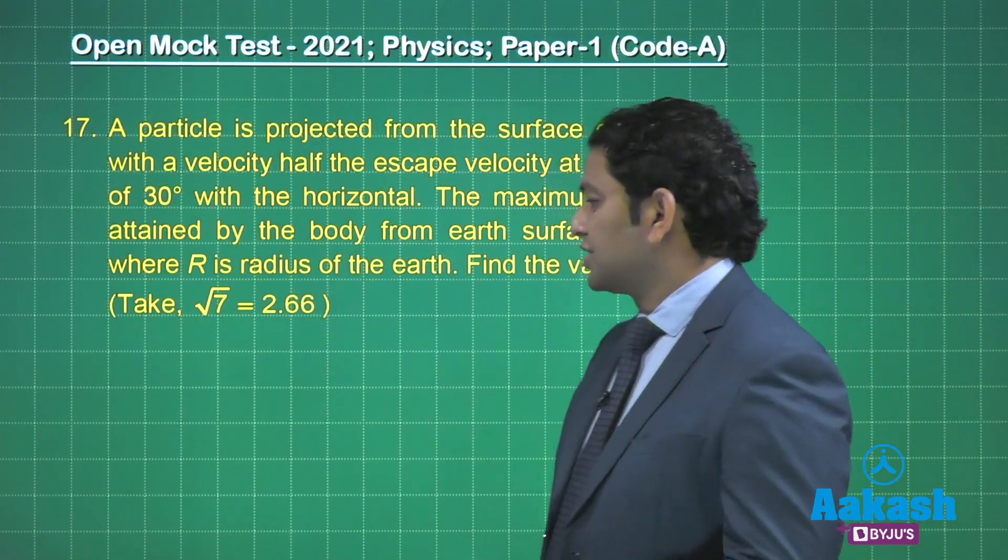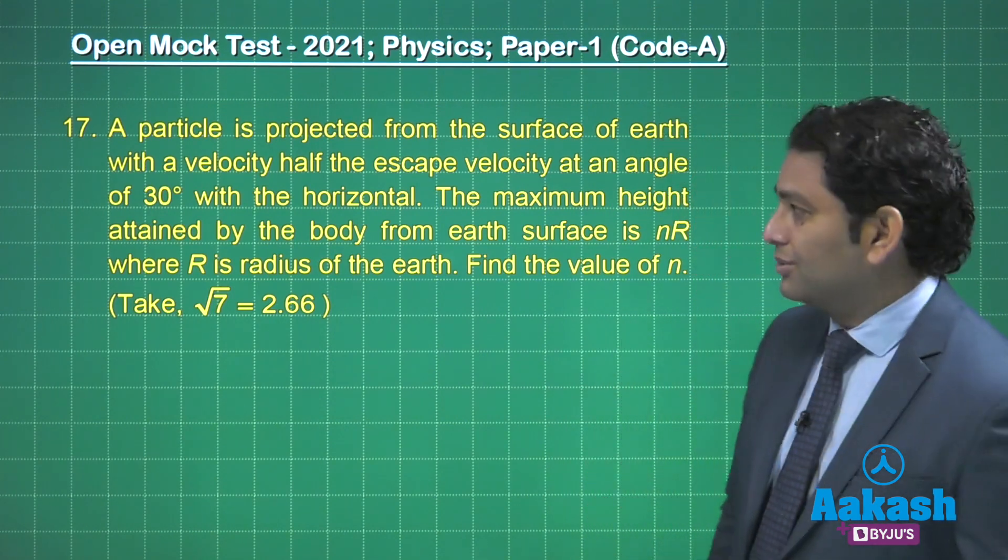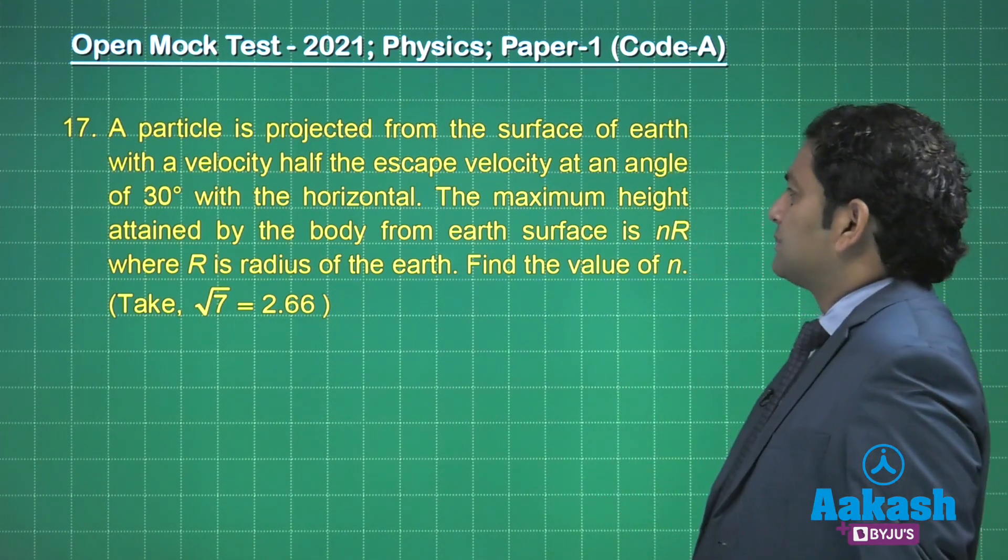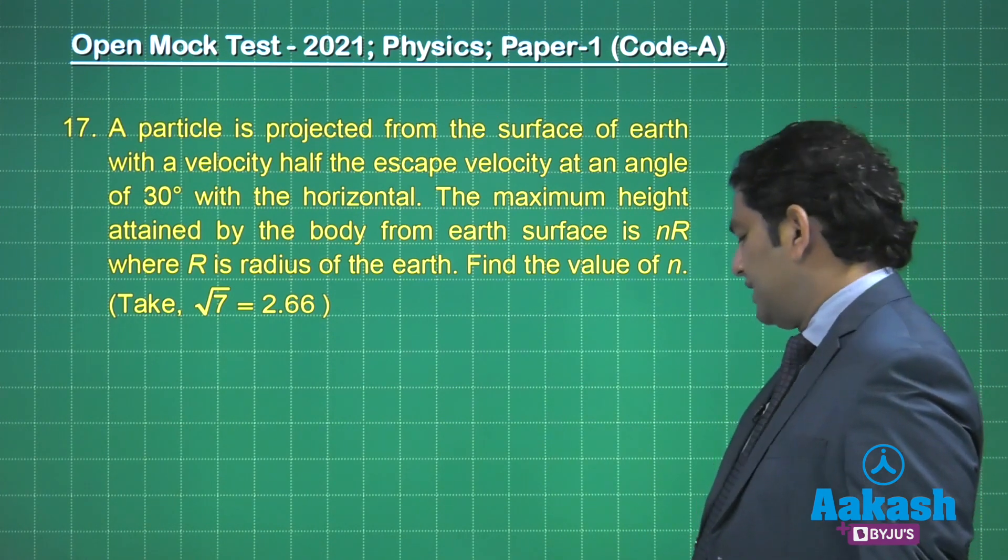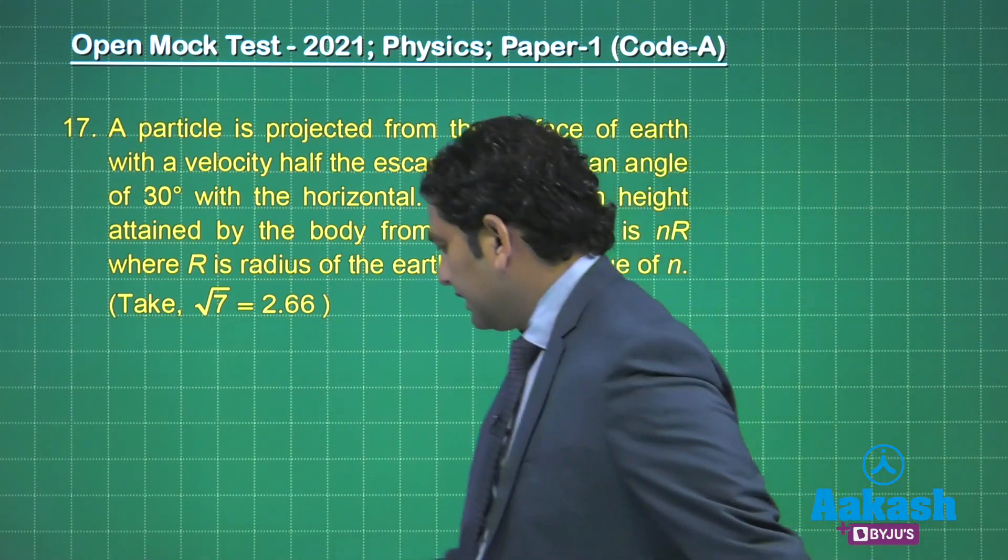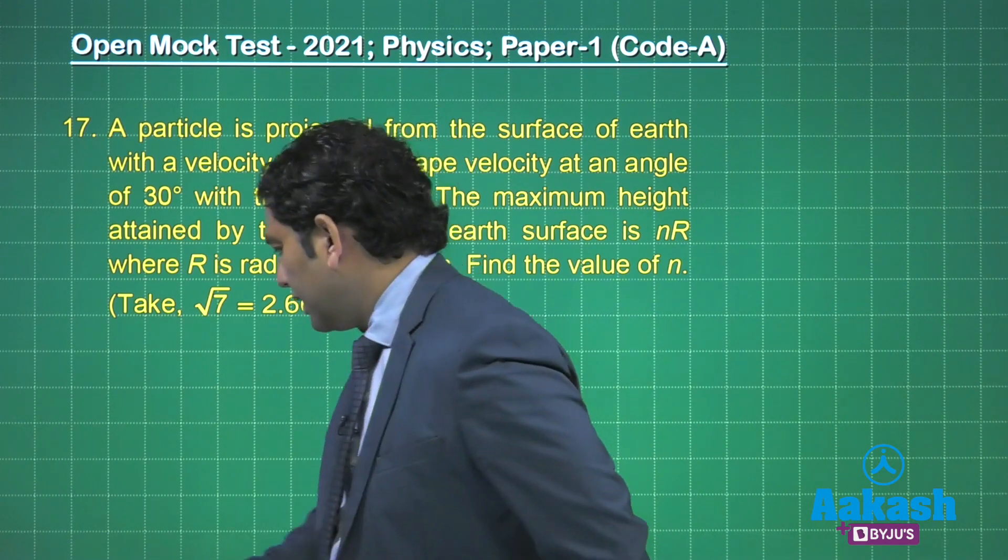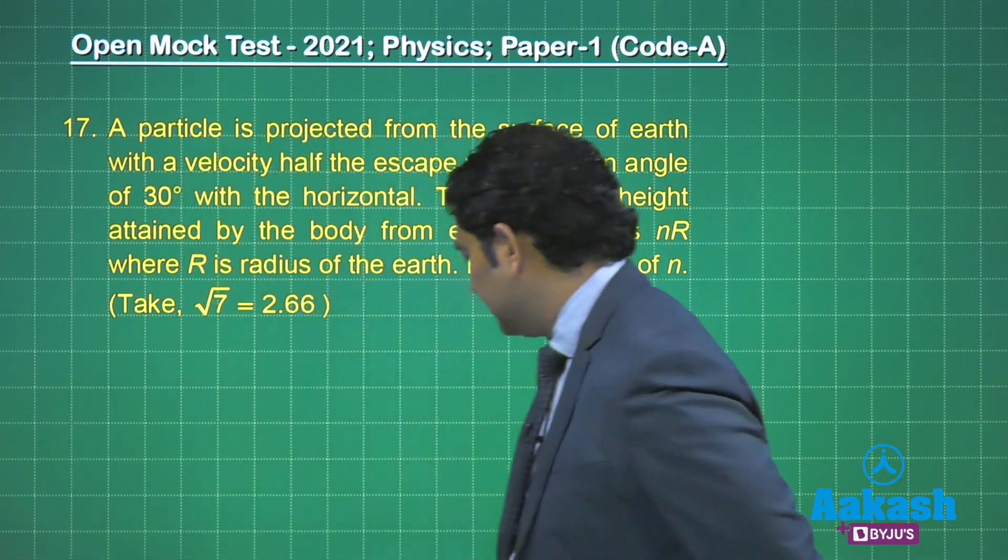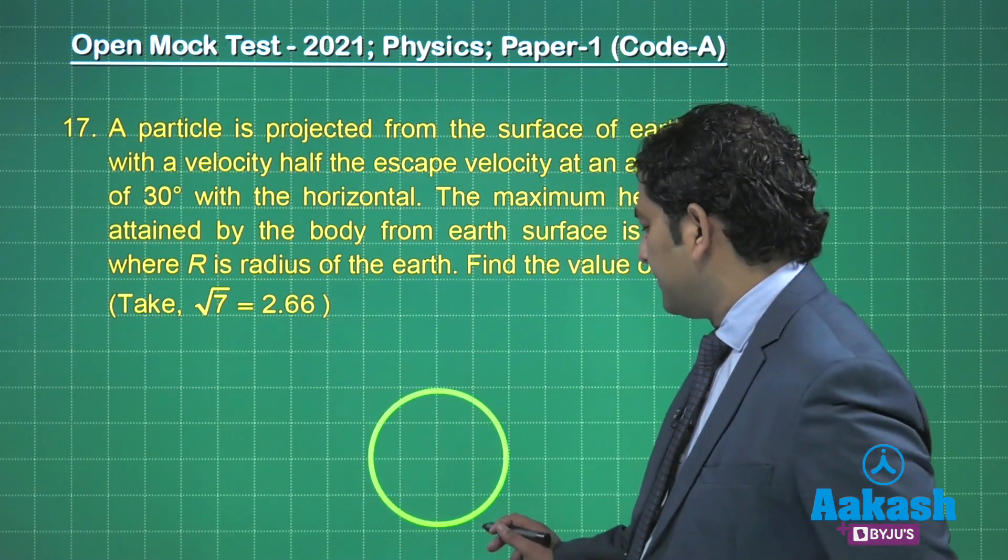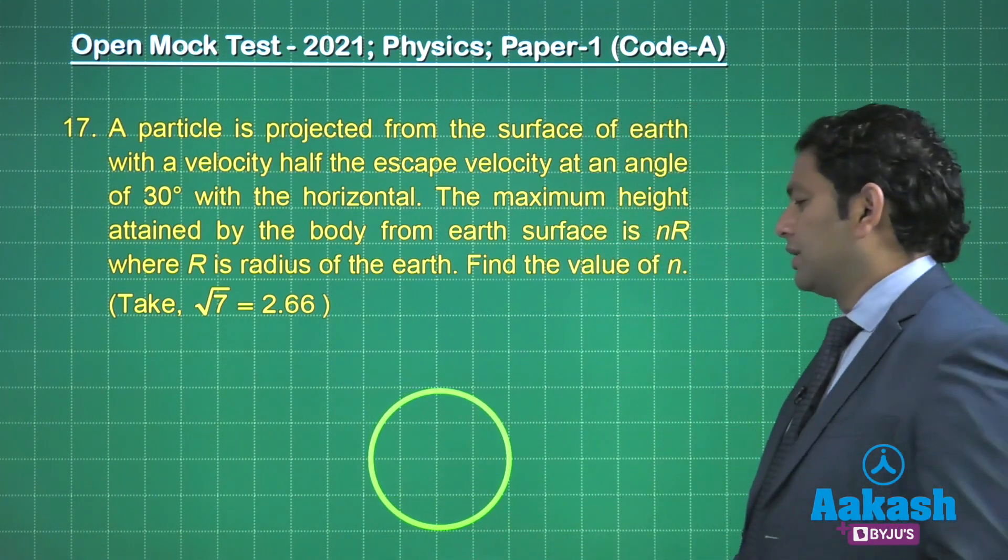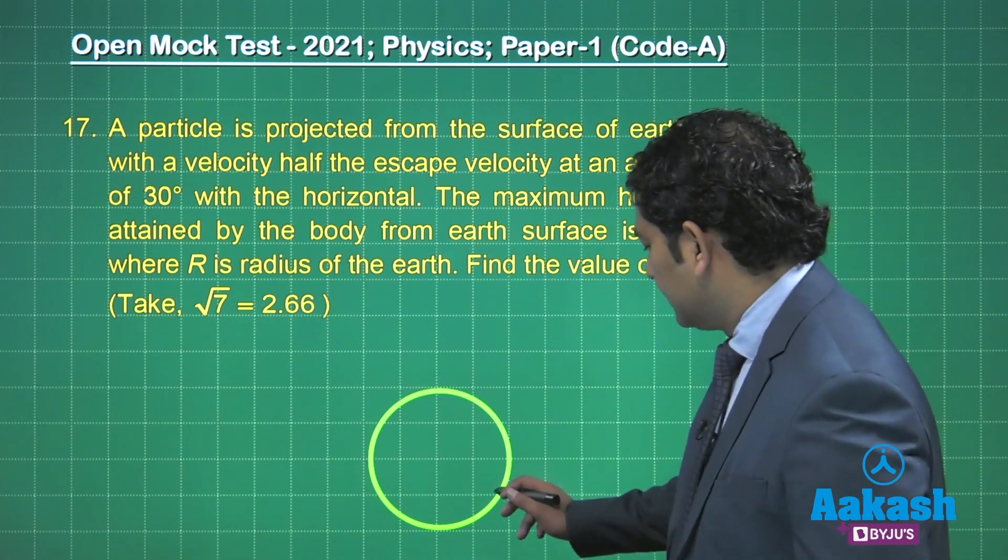That is done. Let's go with this question number 17, that's the second last, penultimate question. A particle is projected from the surface of Earth with a velocity half the escape velocity. Now here what do I require? I require to draw Earth. So let's go green, let me make a green Earth here.